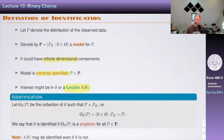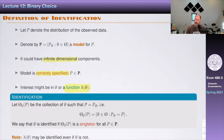The definition of identification: let capital Theta naught P be the collection of all theta such that P equals P_theta — all thetas for which our model is equivalent to the distribution of the data we observe. We say that theta is identified if this set is a singleton for all P, meaning there's a unique value of theta that solves this. It could be that theta itself is not identified but a feature lambda of theta is identified — that often happens and is a lot easier to achieve.